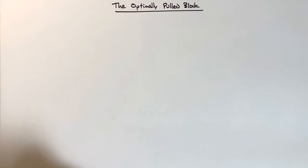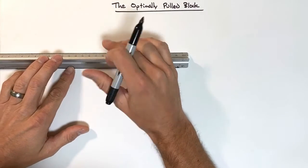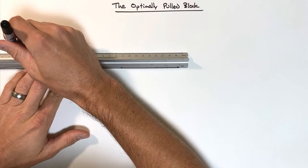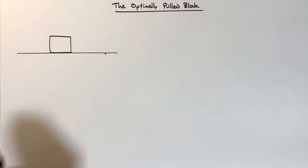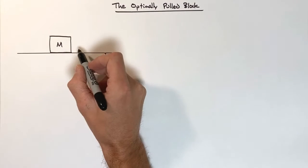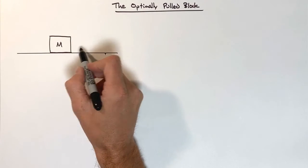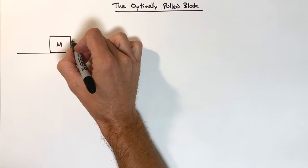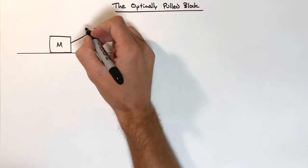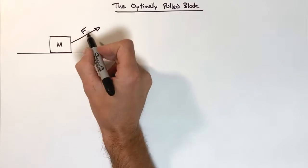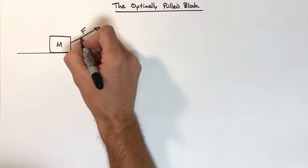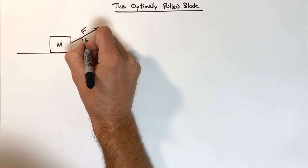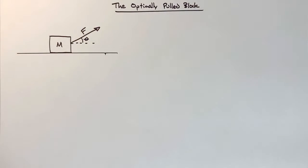Today we're going to take a look at something called the optimally pulled block. This is a block sitting on a level surface which we're going to pull. The block has some mass m, and we're going to pull on it in such a way that we maximize the horizontal acceleration. We pull at an angle with some force F, and given F and m, we want to figure out what angle maximizes the acceleration.